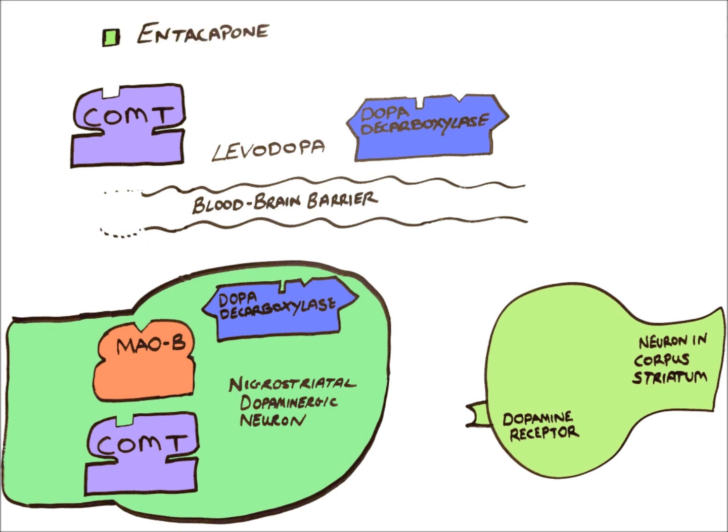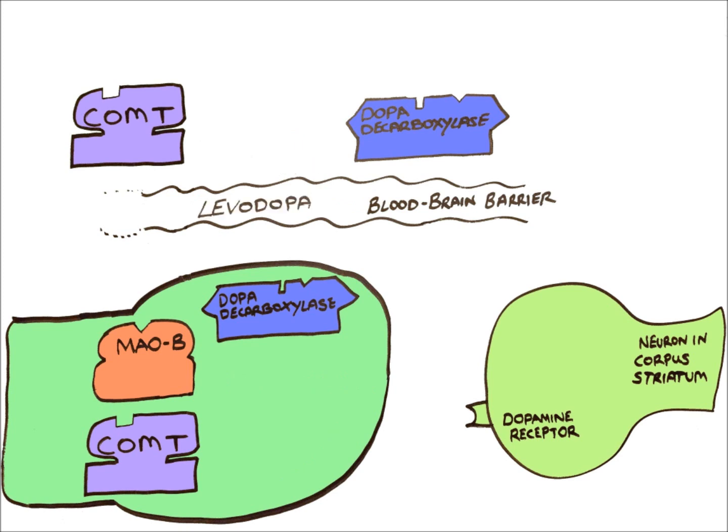COMT inhibitors such as entacapone block peripheral COMT. Blocking the actions of these two peripheral enzymes results in more levodopa crossing the blood-brain barrier to be taken up by nigrostriatal dopaminergic neurons, where it is metabolized by centrally acting dopa-decarboxylase to produce dopamine.